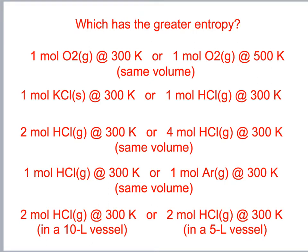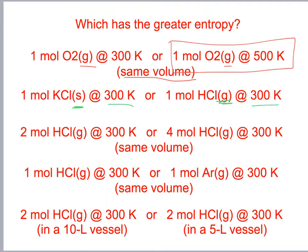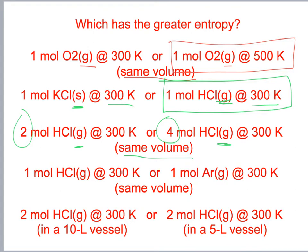Which has greater entropy? A mole of gas at 500 K vs. another temperature — the one moving faster has more entropy. A solid vs. a gas at 300 K — the gas has greater entropy. Two moles of gas vs. four moles at the same volume — more moles means more entropy.